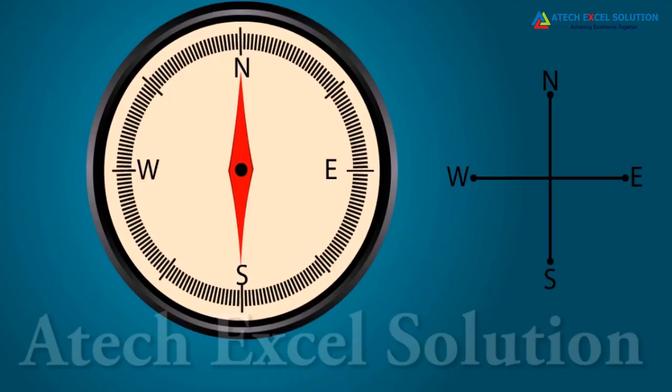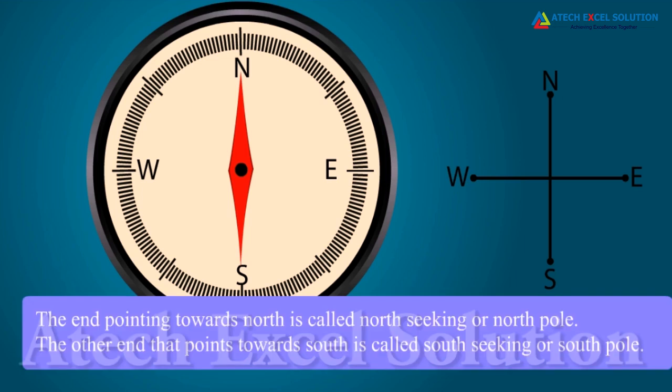The ends of the compass needle point towards north and south directions. The end pointing towards north is called north seeking or north pole. The other end that points towards south is called south seeking or south pole.